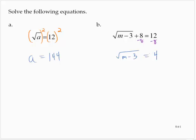Now, using the same ideas in the previous exercise, I'm going to square both sides of the equation. The square root of m minus 3 squared is m minus 3. So m minus 3 is equal to 16, and we add 3 to both sides, and m equals 19.